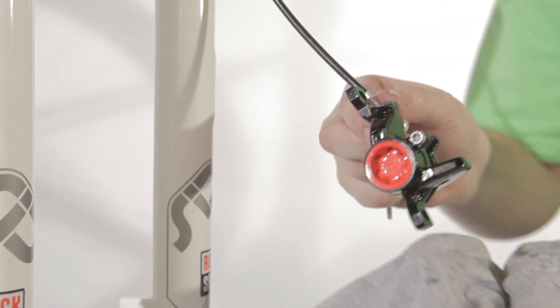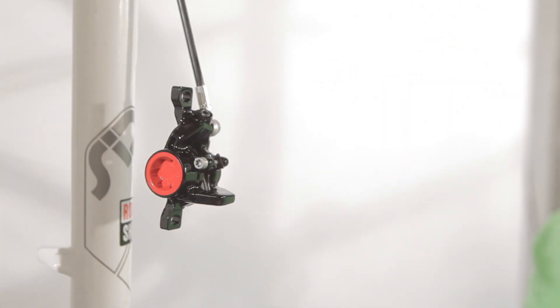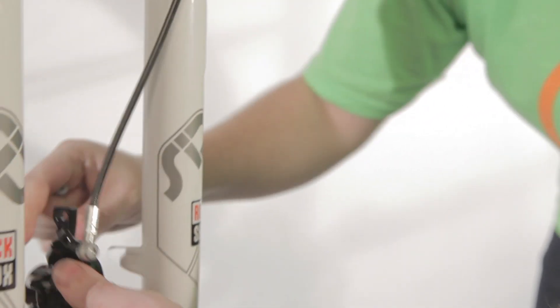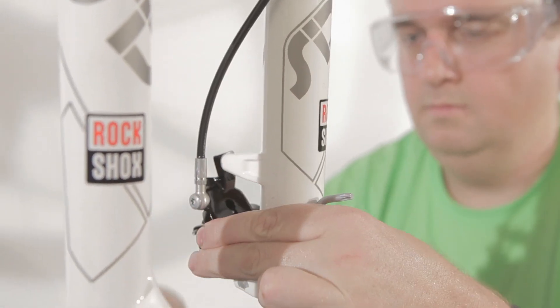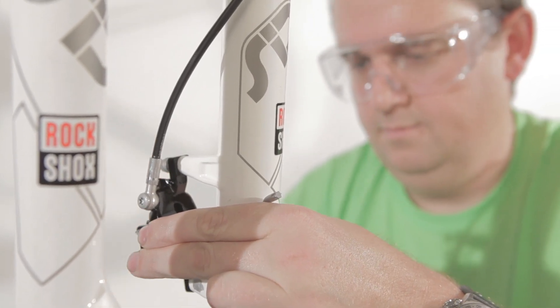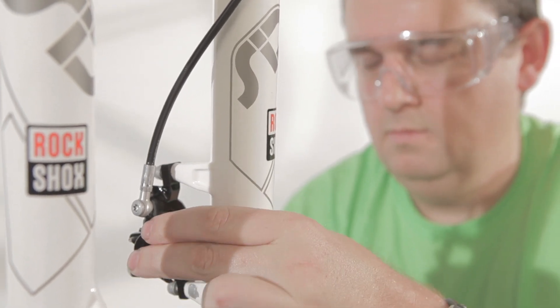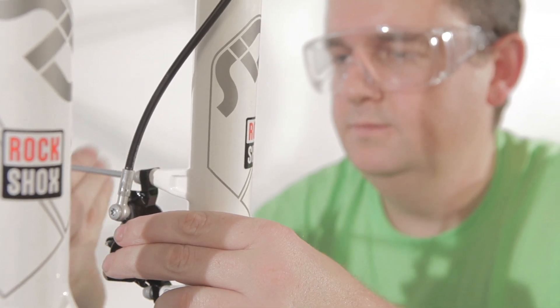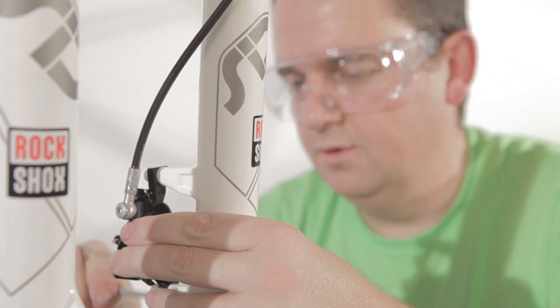Now you can simply put on the caliper back onto the frame. Put it in position again. Torque it in. Not all the way down since we still need to adjust the caliper itself once the wheel and the rotor is in.